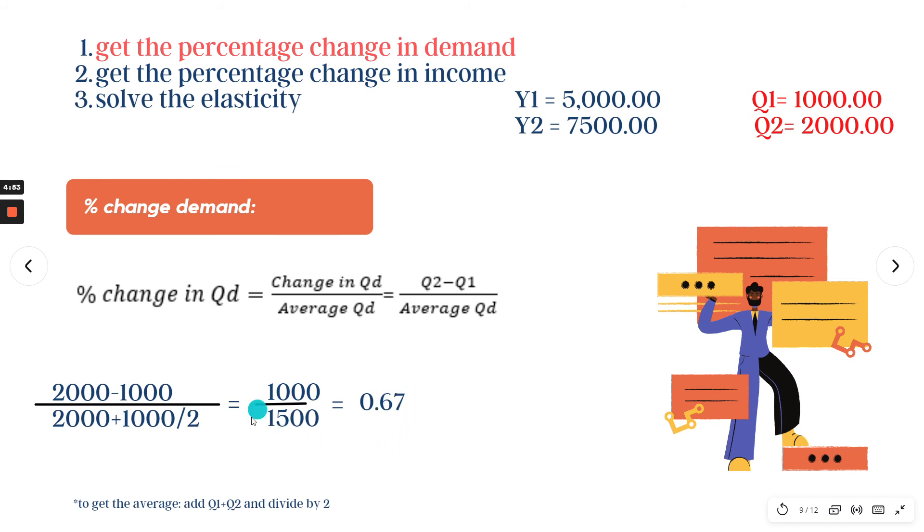Why 1,500? That's because we are getting the average of quantity demanded. To get the average, we have to add the 2 quantities divided by 2. If there are 3 quantities, we are going to divide that by 3. But we are only talking about 2 quantities.